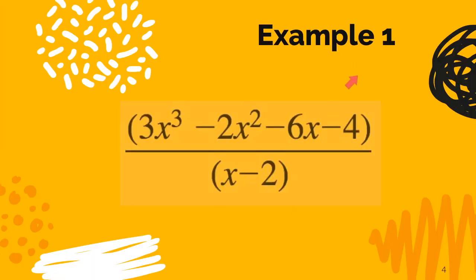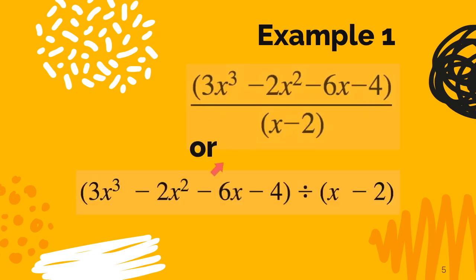So here's the first example we're going to work through very carefully, where we have a polynomial and we're dividing it by a linear binomial. Linear means x to the first. Sometimes instead of seeing it in fraction form we write it as this polynomial and we use the divide by symbol and here's our linear binomial. So you might see it either way.